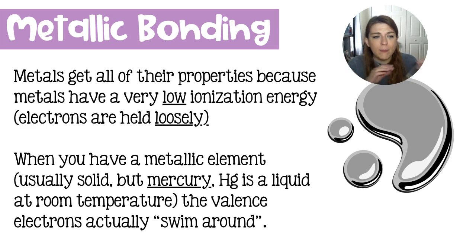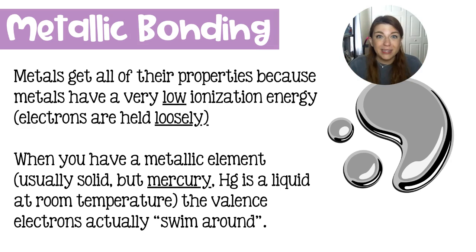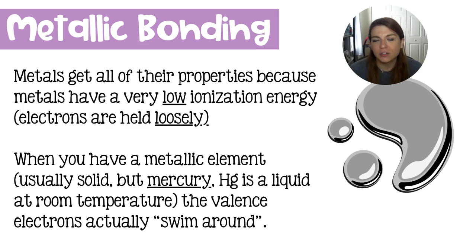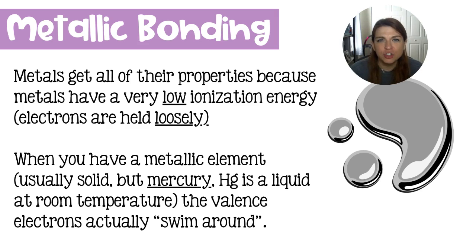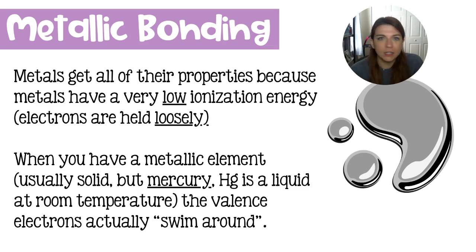This is going to happen for a chunk of metal by itself. Most of the metals on the periodic table are solid at standard temperature and pressure. Mercury is the only exception to that rule — its symbol is Hg, and it's a liquid at room temperature, but it is going to have the same electrons-swimming-around properties.